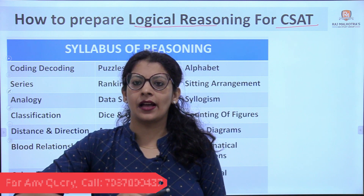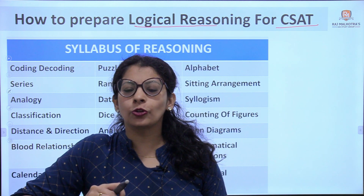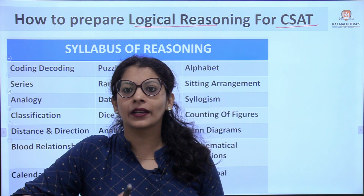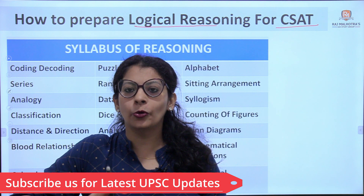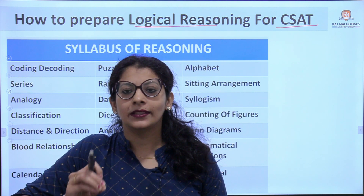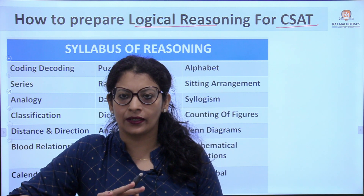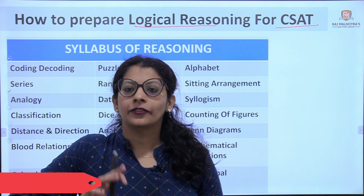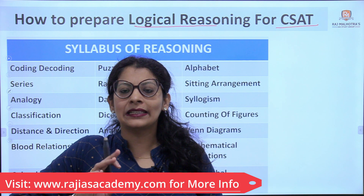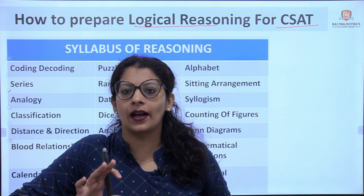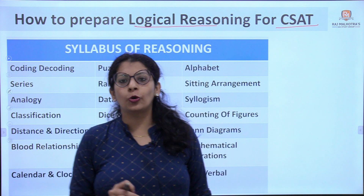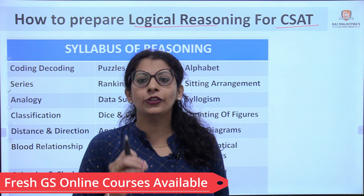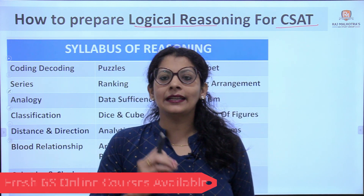In the CSAT exam there are 80 questions, each question carries 2.5 marks, so total marks is 200. Negative marking is also there, so attempt only those questions in which you are sure your answer is correct. CSAT exam is of qualifying nature — you have to score at least 33 percent, which means at least 66 marks out of 200, to qualify.